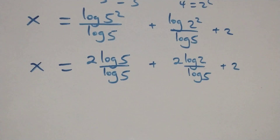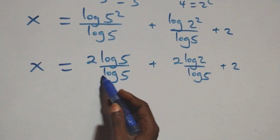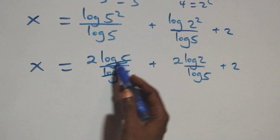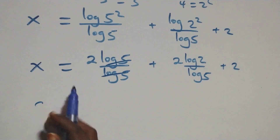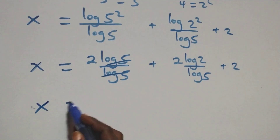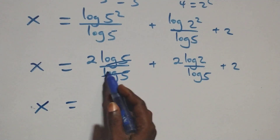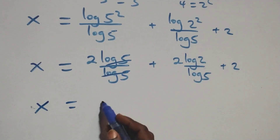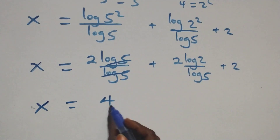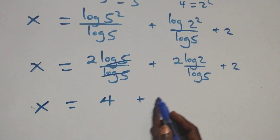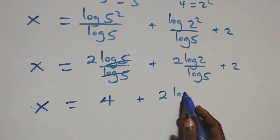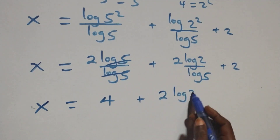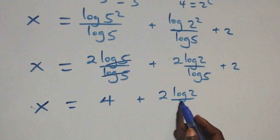We have log 5 over log 5, which simplifies to 1, so 2 log 5 over log 5 equals 2. We have x equals 2 plus 2, that's 4, then plus 2 log 2 over log 5.